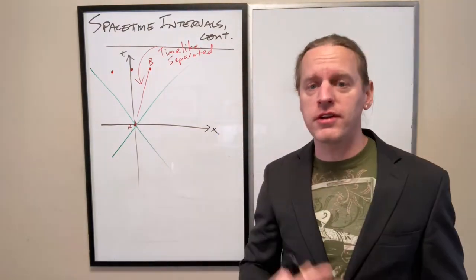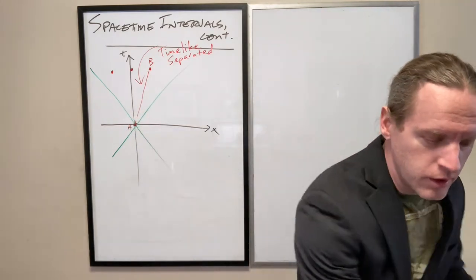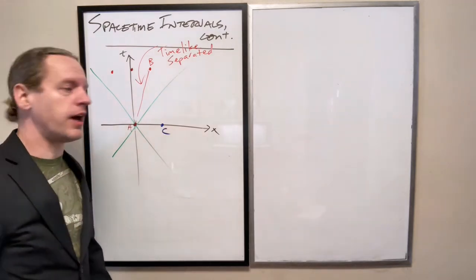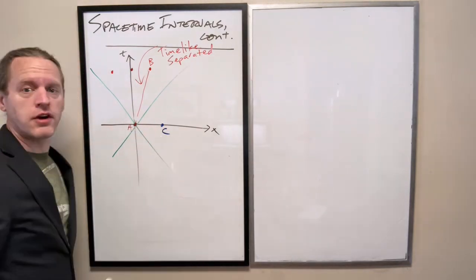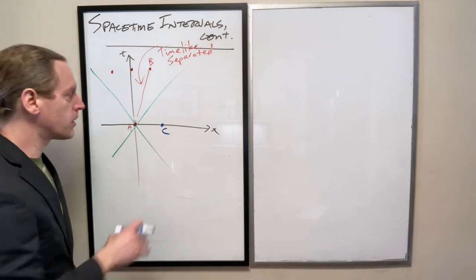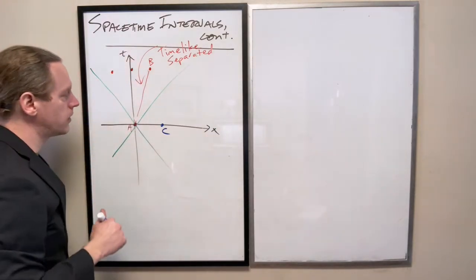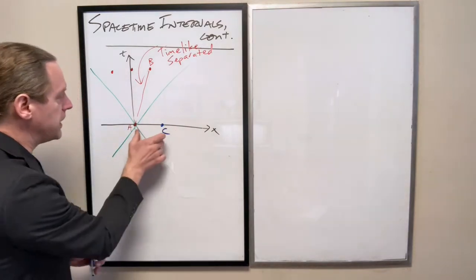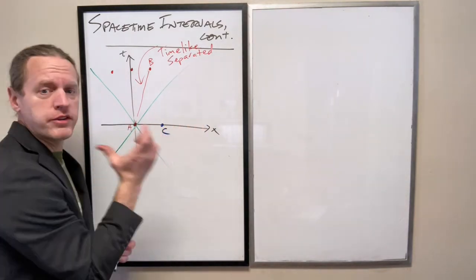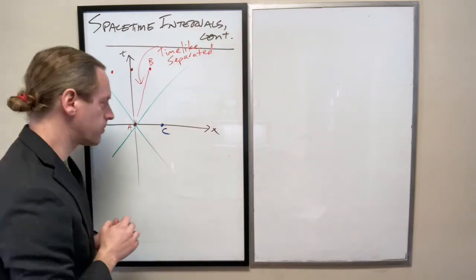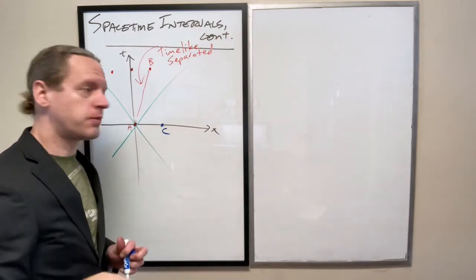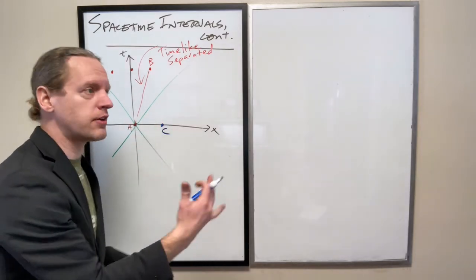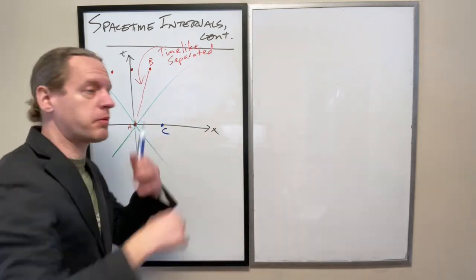We're going to do the same thing now on the other side of the light cone. If I put some event C right there, these two events are only separated in space. They both occur at a T of zero. So these two events are space-like separated because in this reference frame they're only separated in space. That means they're simultaneous. Events A and C are in fact simultaneous with only space separation.